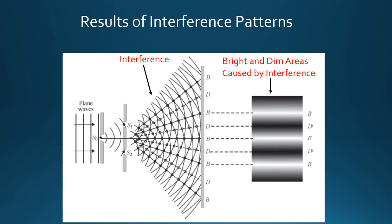What you see here is the same thing again, only showing the bright and dim areas caused by the interference.